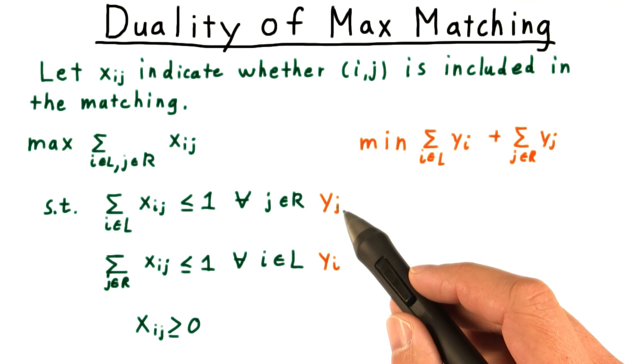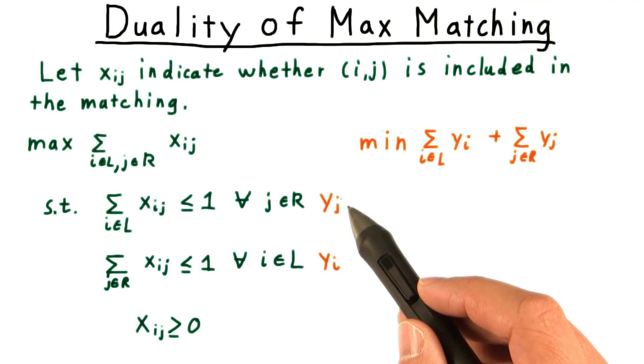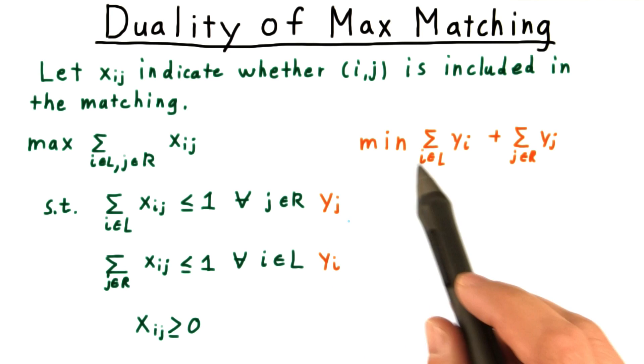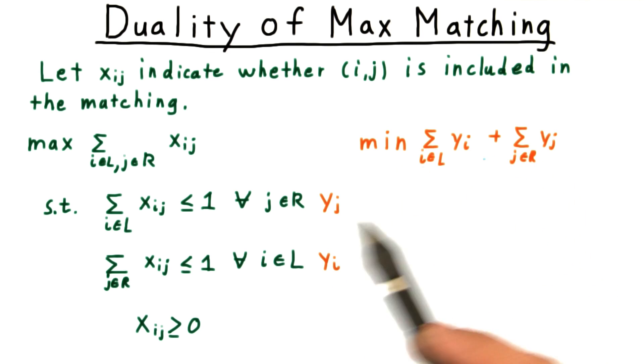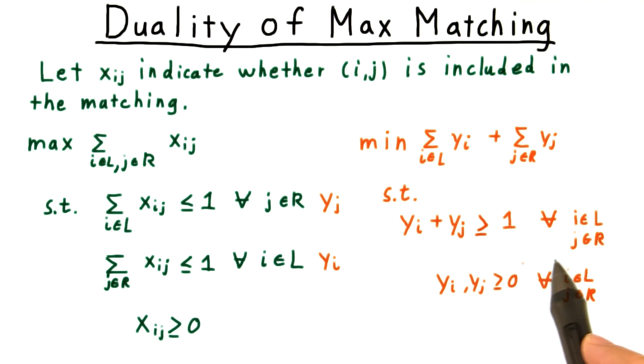To build the dual program, we'll let yi and yj be the variables corresponding to these constraints. And we'll want to minimize their sum because the coefficients on the constraints here are all 1.